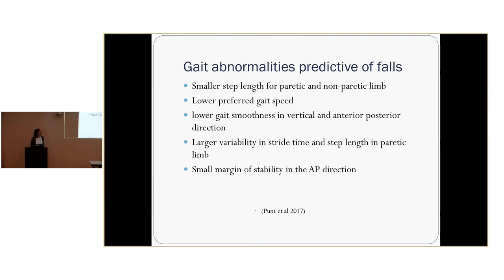Another study looked at what biomechanical factors might cause a patient to have more falls after having a stroke. Some of those factors were: smaller step length for the paretic versus non-paretic limb, lower gait speed, lower gait smoothness in vertical and anterior-posterior directions, larger variability in stride time and step length in the paretic limb, and small margin of stability in the AP direction. We'll go into more detail about gait analysis.